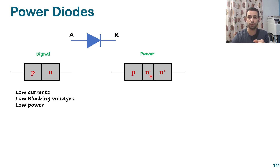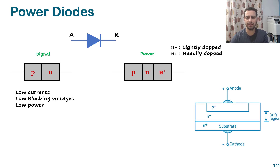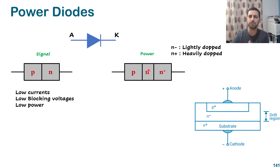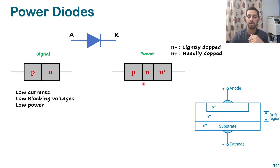The power diode has a p-type region but also two n-type regions. The first one is n-minus (n-negative) meaning lightly doped, and the second one is n-plus (n-positive) meaning heavily doped. This lightly doped region doesn't have lots of charges, and it increases the depletion region and distance, which brings us higher blocking voltage. That's why the power diode can handle higher voltage.